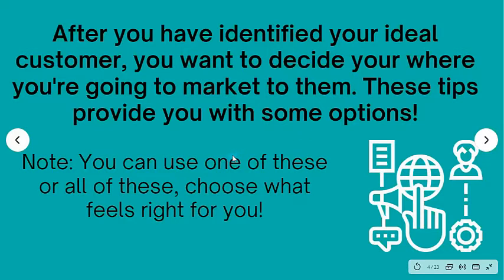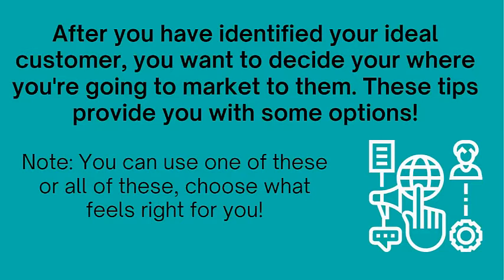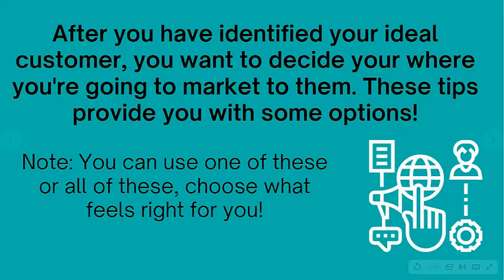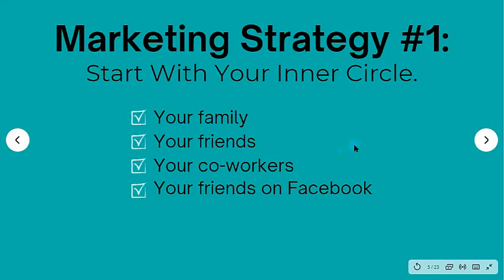There are going to be seven different things we're talking about on this call, and you can use one or all of them — choose what feels right for you. There are going to be some free methods and some paid methods. If you're just starting out, I like to start with the free methods — more hard work, more hustle, more grinding. But when you get a few students and some income, transition to the paid methods. The idea is if you're doing all seven and each marketing avenue gets you one student per month, that's seven students a month trickling in from all these different methods.